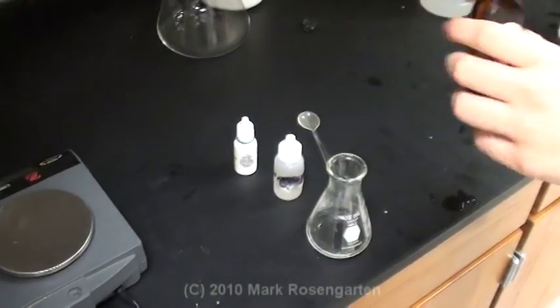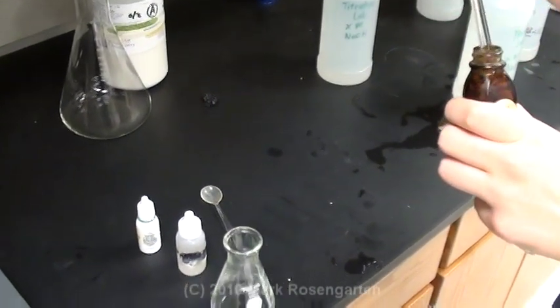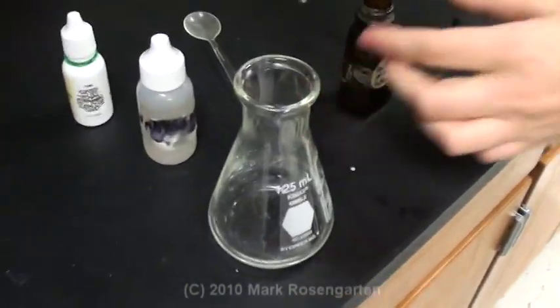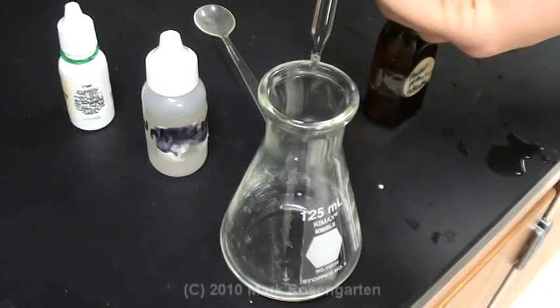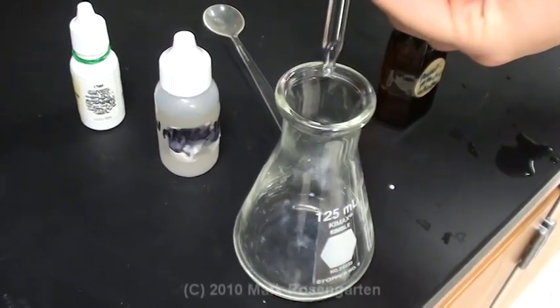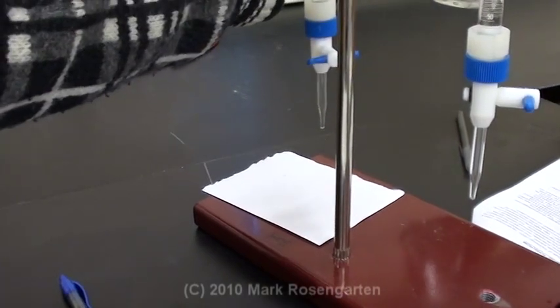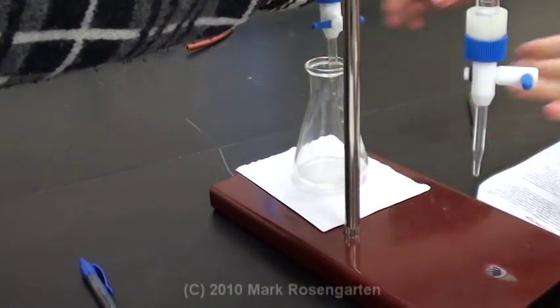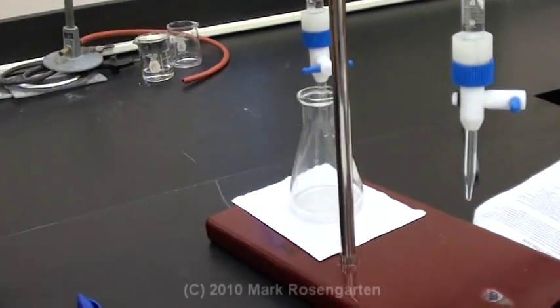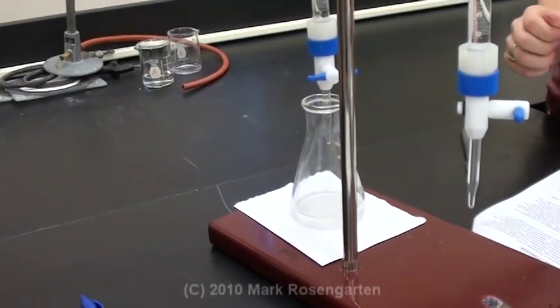And now add three drops of phenolphthalein to your acid. Place a white piece of paper underneath the base burette. Place the acid flask underneath and start adding your base.